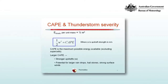Convective available potential energy (CAPE) may be related to the potential for severity in a thunderstorm. Kinetic energy per unit mass of the updraft air is equal to half W squared, where W is the updraft strength in meters per second. That can be equated directly to the CAPE, so that half W squared equals the CAPE. CAPE is the maximum possible energy available in a thunderstorm updraft, excluding supercells where there are other dynamics going on.